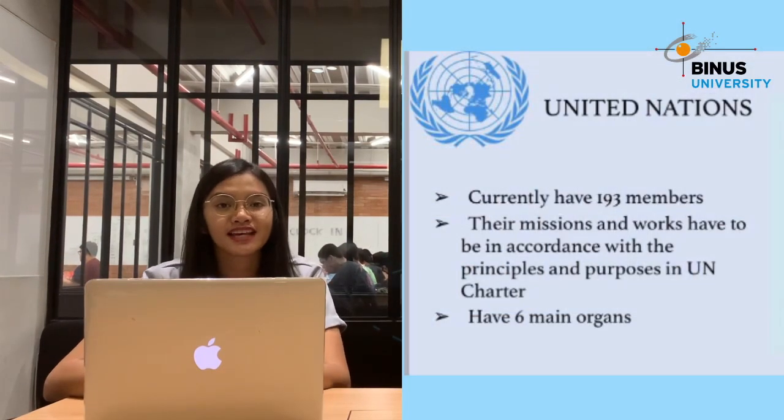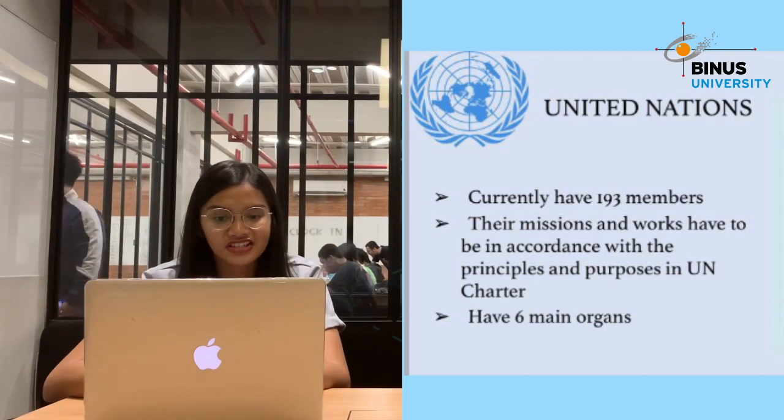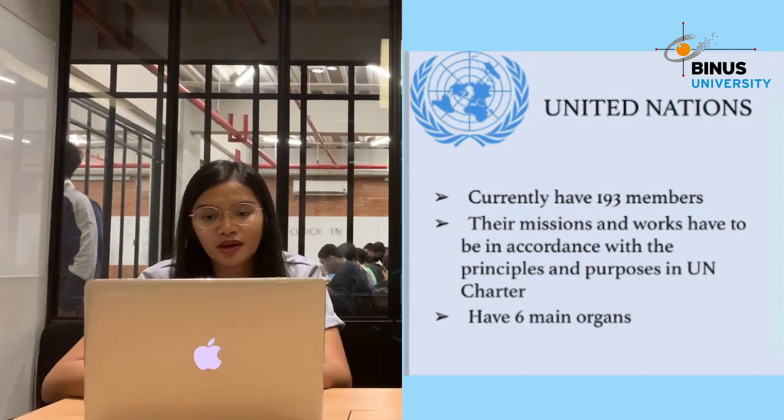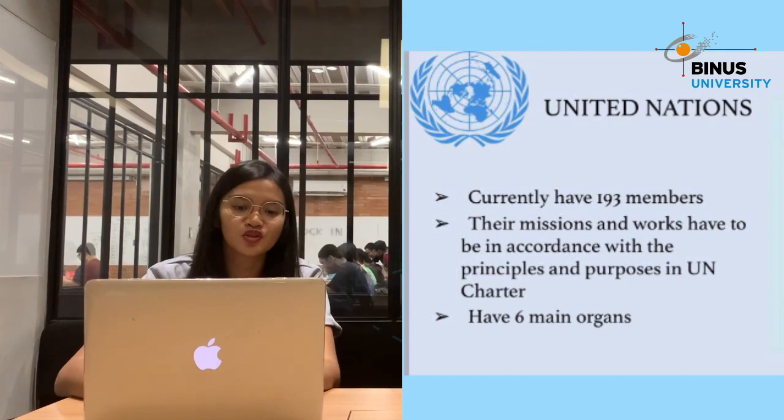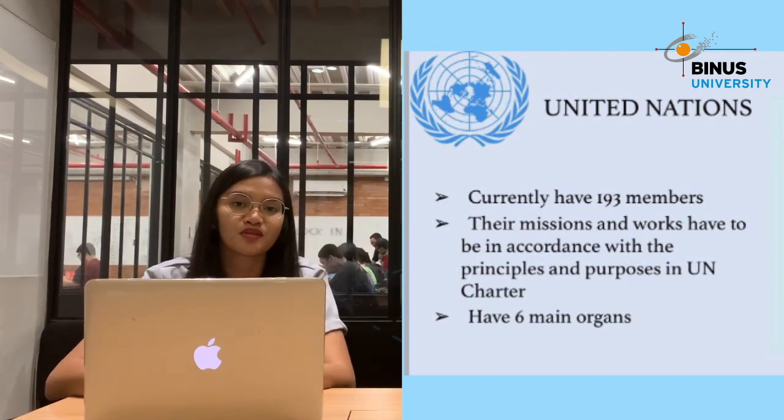Now let's start with the basic information about the UN. As you know, the UN is an international organization with 193 members, and its mission and works must be in accordance with the principles and purposes of the UN Charter. There are six main organs in the UN, each with their own responsibilities, but we'll just focus on one of the six main organs, which is the UNSC, which is responsible for maintaining international security and peace.